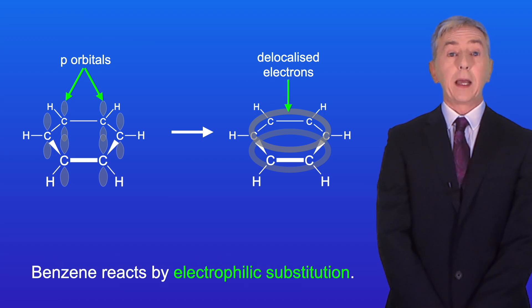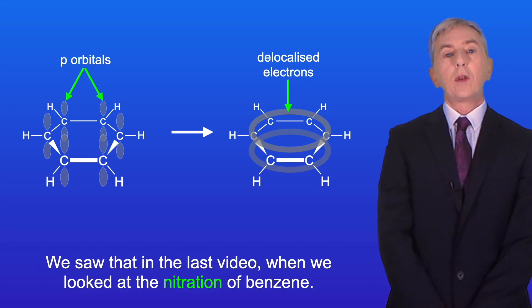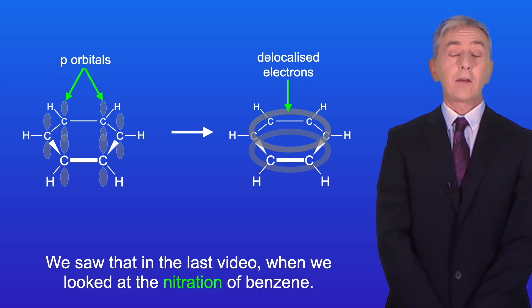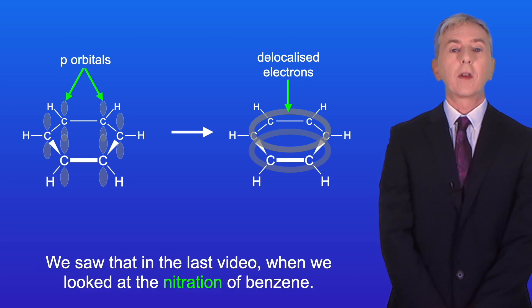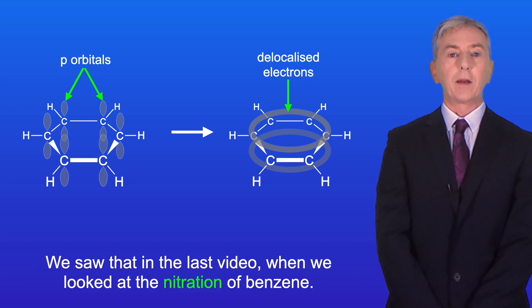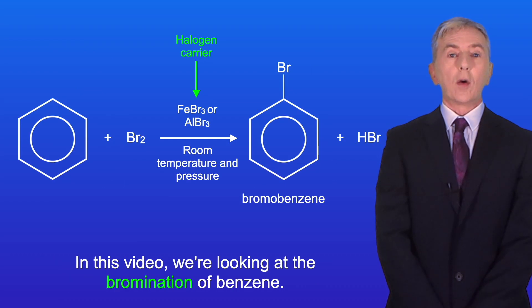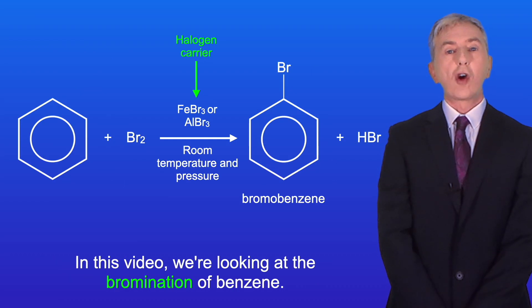When benzene reacts, the delocalized electron system is maintained in the product. Benzene reacts by electrophilic substitution — we saw that in the last video when we looked at the nitration of benzene. In this video we're looking at the bromination of benzene.